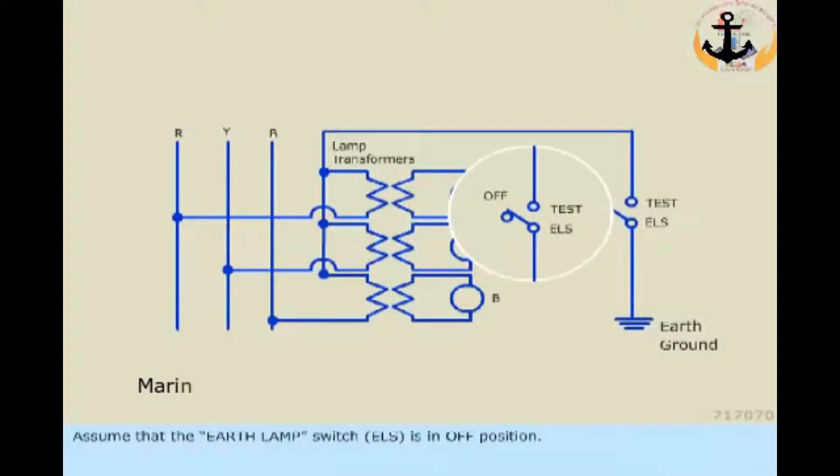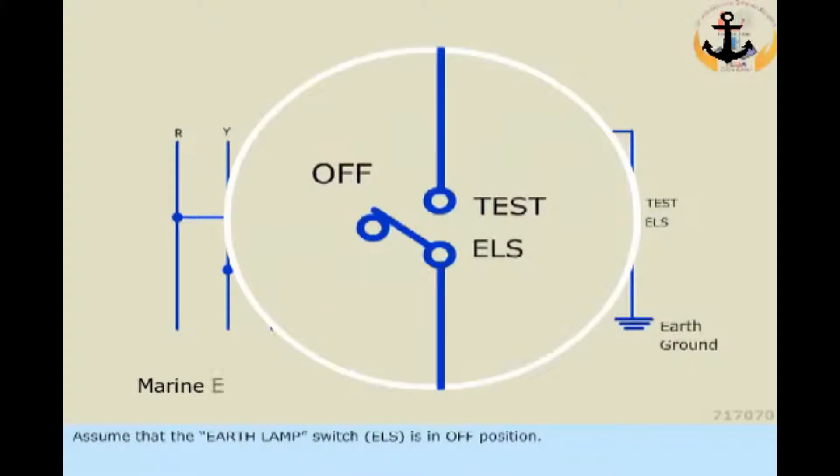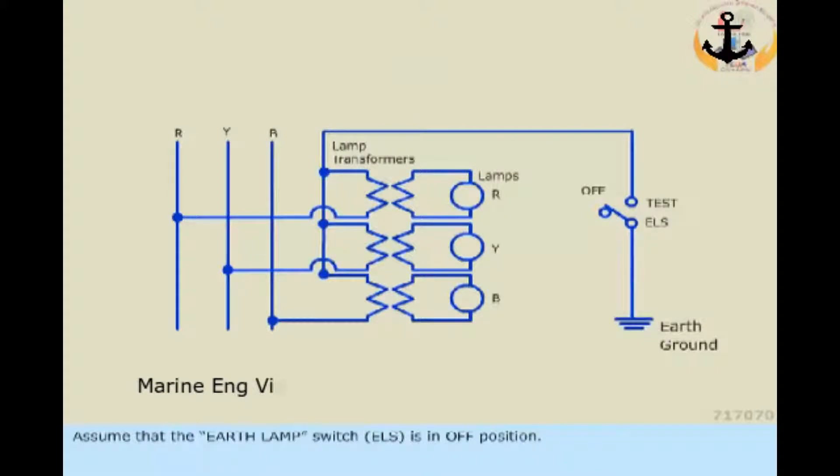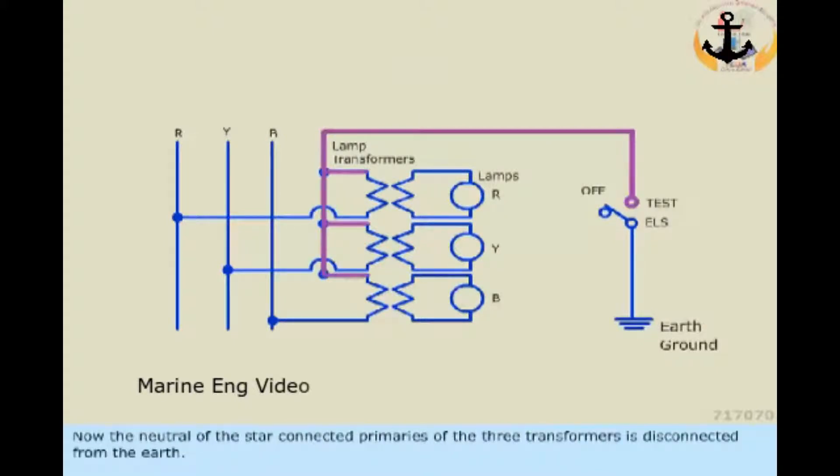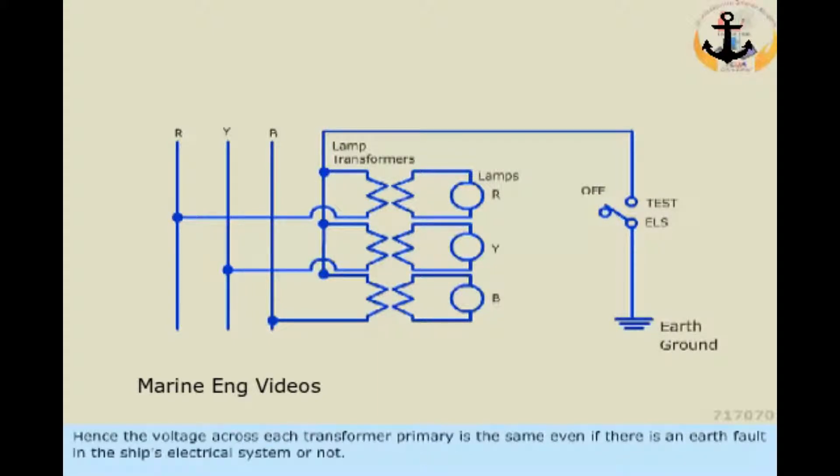Assume that the earth lamp switch ELS is in OFF position. Now, the neutral of the star connected primaries of the three transformers is disconnected from the earth. Hence, the voltage across each transformer primary is the same even if there is an earth fault in the ship's electrical system or node.